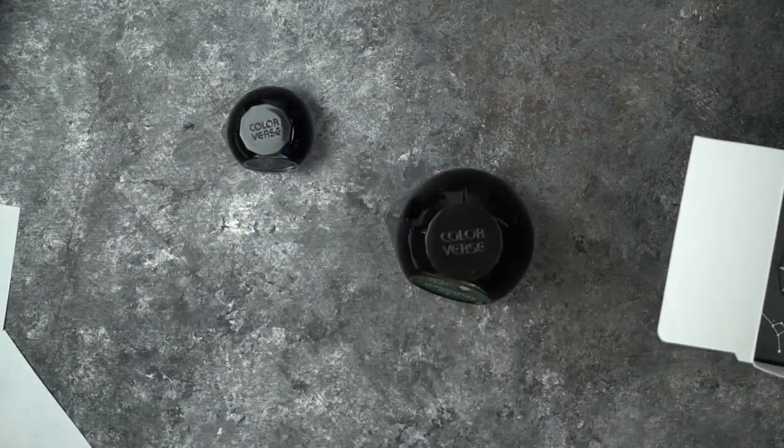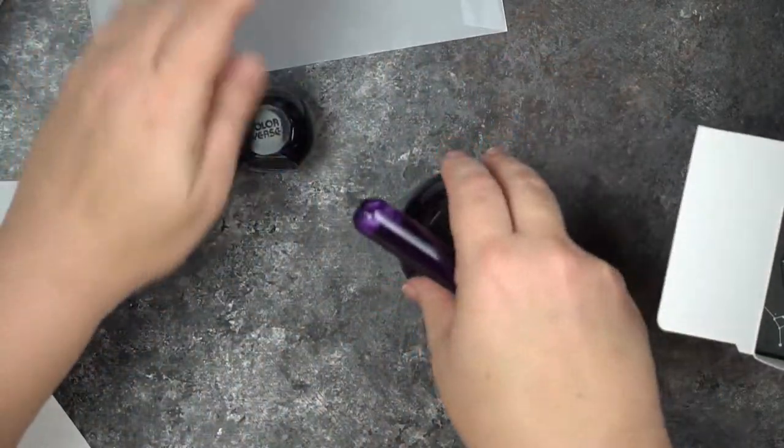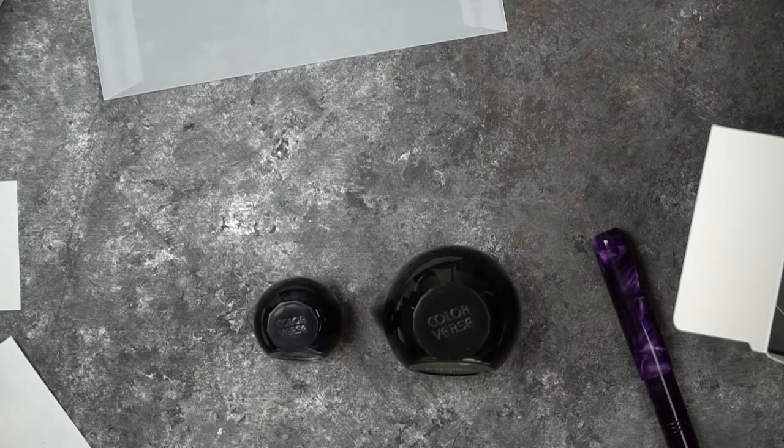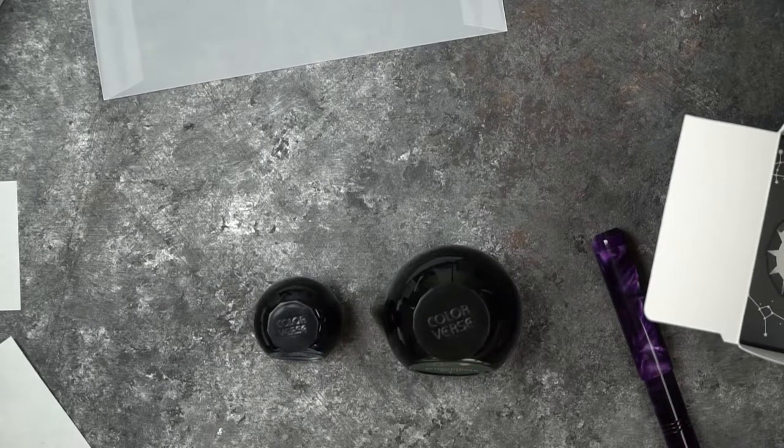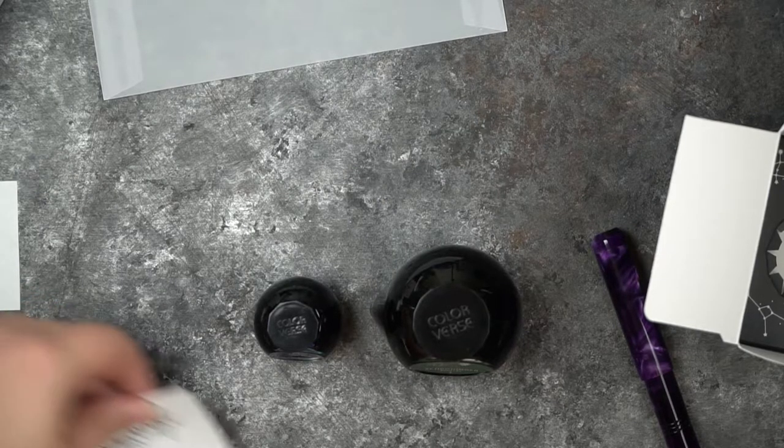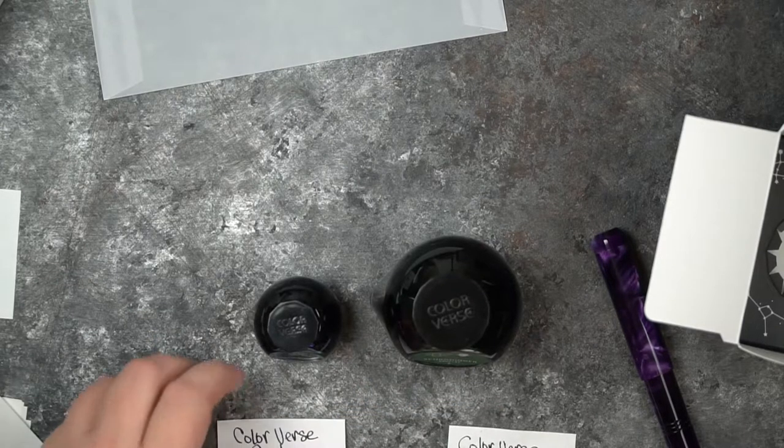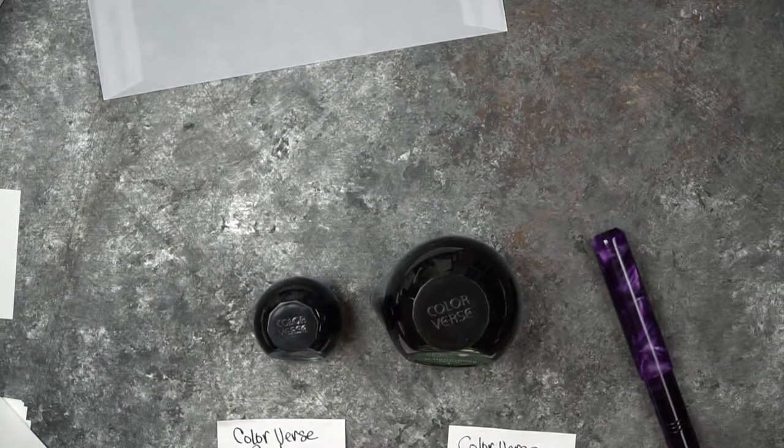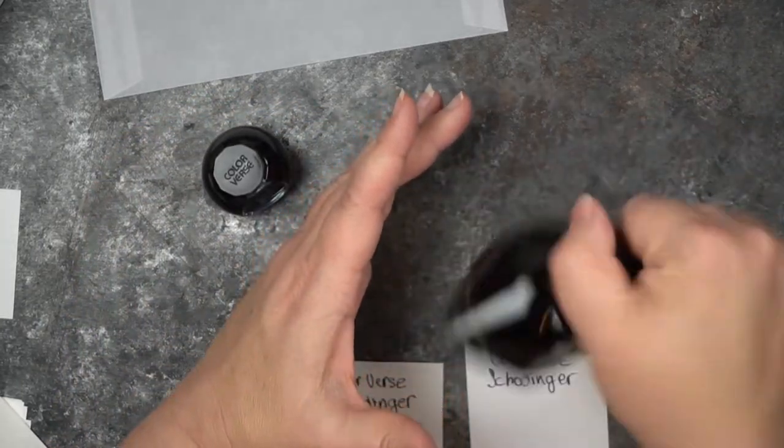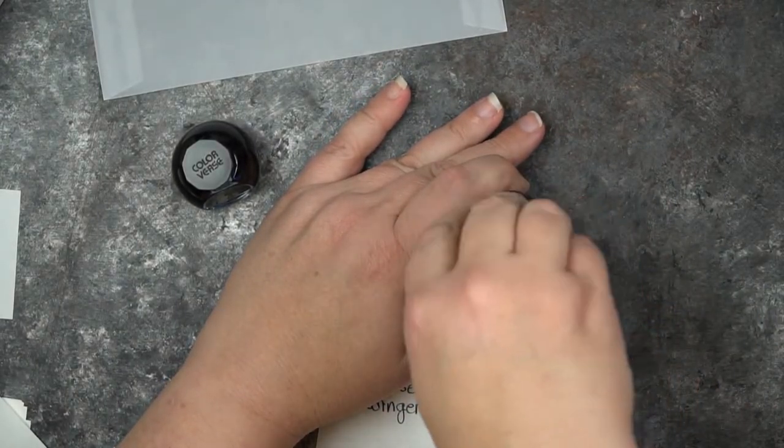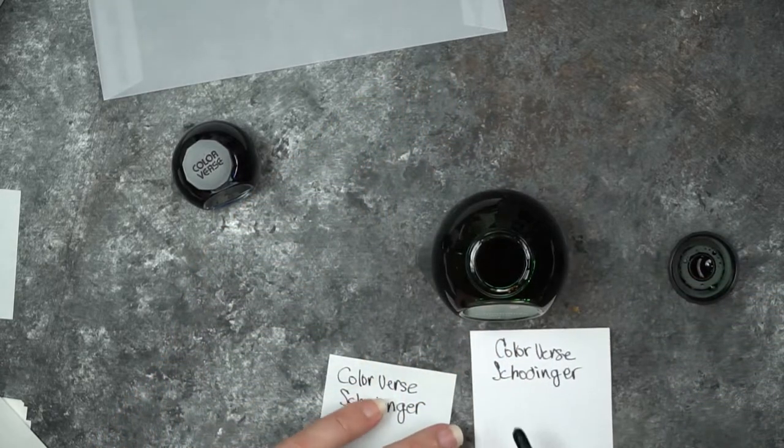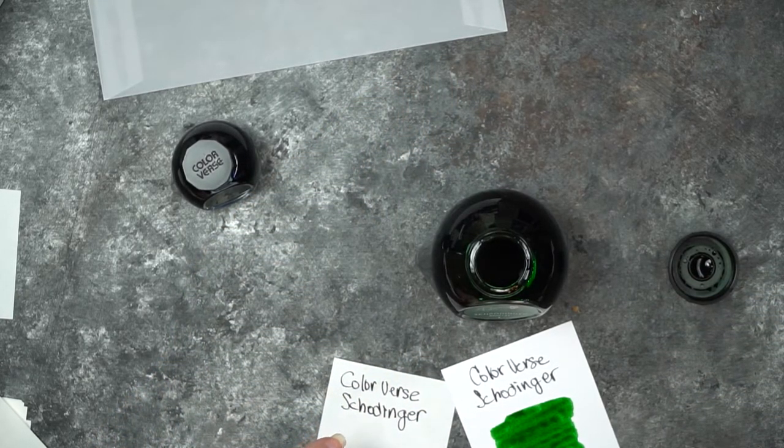Now, I'm going to swatch them twice. I will say that these little bottles are a little bit hard to fill from. I have already used one of the colors. I'm going to swatch these on both Tomoe River paper and I'm also going to swatch these on just regular card stock as well. They come in I believe it's a 65ml and a 15ml bottle. They are not water resistant.